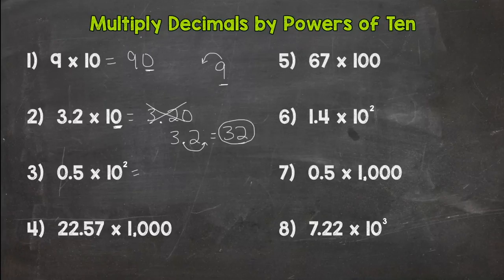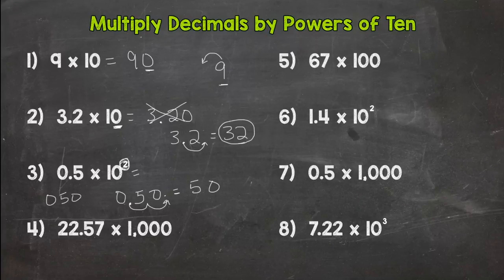So we have 5 tenths times 10 to the second power, which means 10 times 10 or 100. So I'm going to rewrite my 5 tenths down here and move the decimal two times because I have an exponent of 2. One, two, fill this with a 0, and my answer is 50. You may be thinking, well, you have a 0, 5, 0. Well, this 0 in front of the 50 doesn't mean anything. So our product is 50.